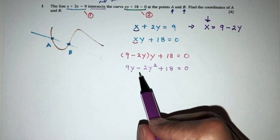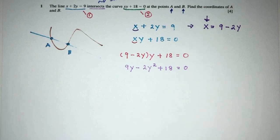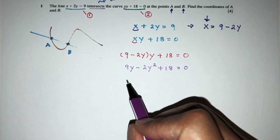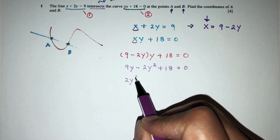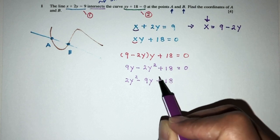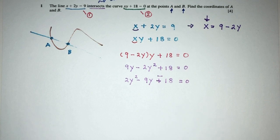Now, let's do something. Let's send everything to this side because here we have minus 2y square. I don't like to work with negative sign. Let me send everything to the right-hand side. You will have 2y square minus 9y minus 18 will be 0. The sign will change, right?